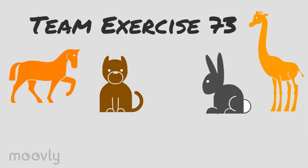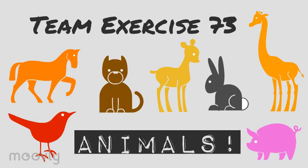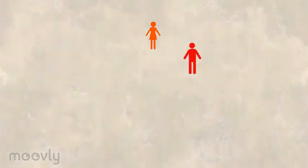Team Exercise 73 Animals. During the exercise the team sits in a circle.